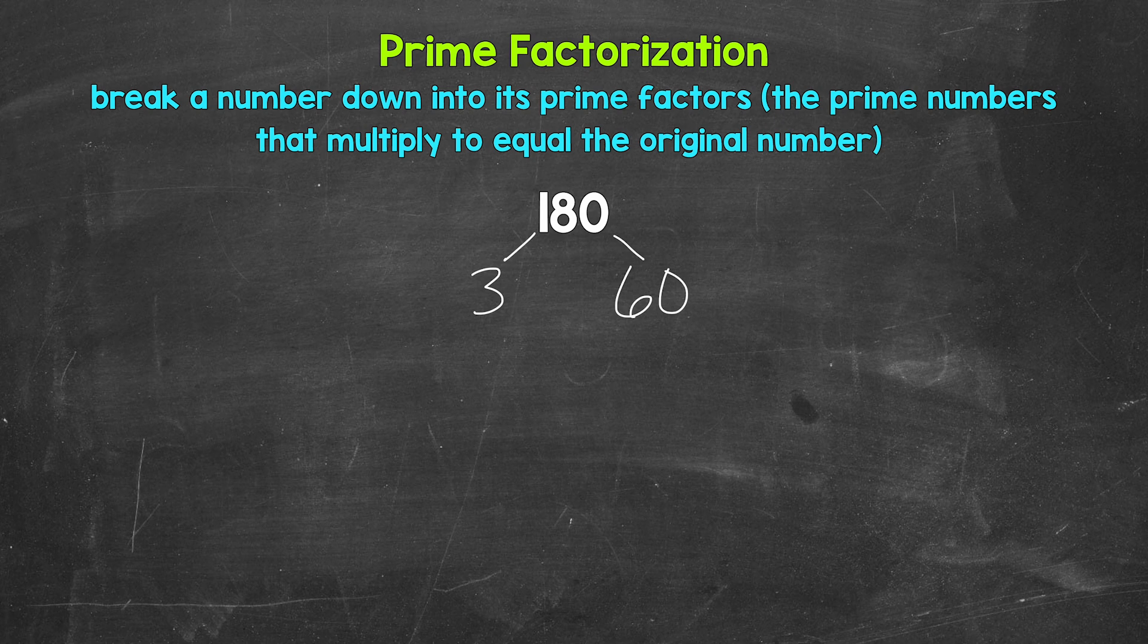Now keep in mind, there are other factors we could have started with here. For example, 2 and 90, and there are other options as well. These will all work. Depending on the number, there can be multiple different factors that we can use, so there can be multiple ways we can do these. But in the end, we will get to the same prime numbers, and that's what's important.